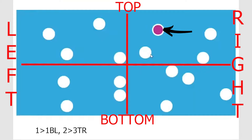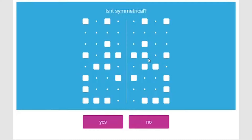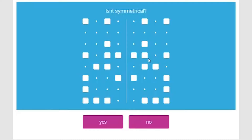Write all positions in sequence as they appear. For symmetrical questions, it's best to go line by line starting from the top — verify if the top line is symmetrical, then move to the second line, then the third, and so on. If any line from top to bottom is not symmetrical, you don't need to check further; simply consider the image to be not symmetrical.